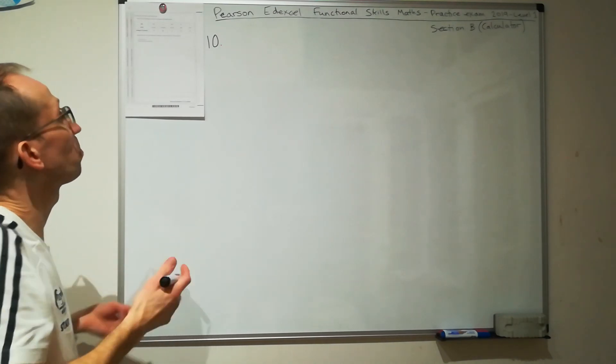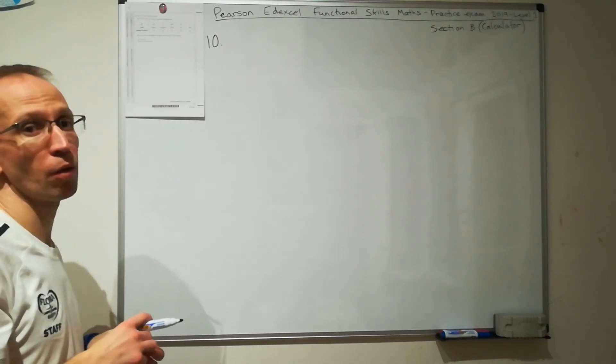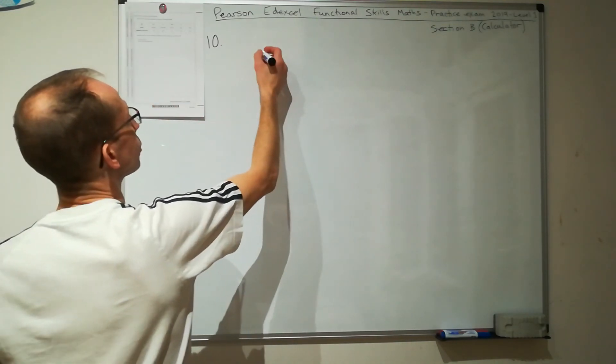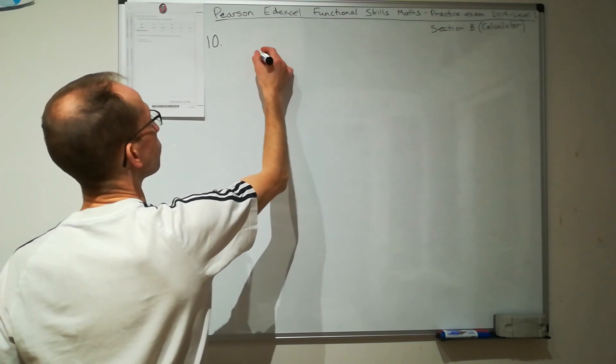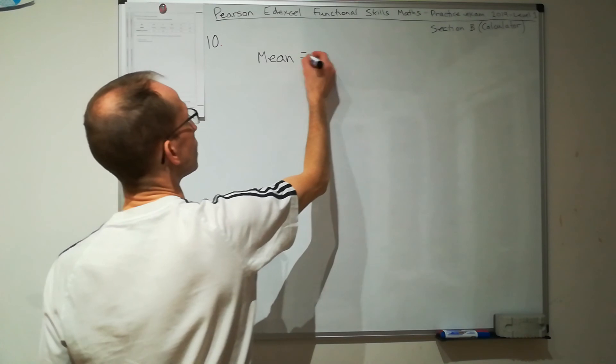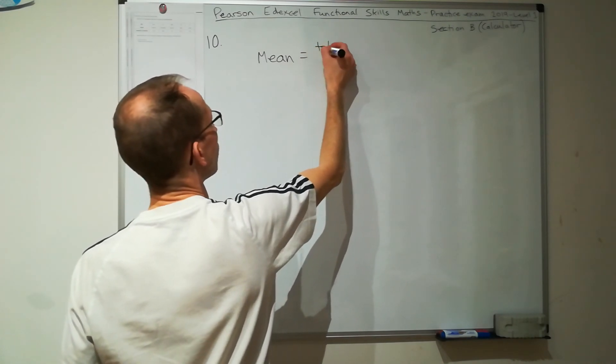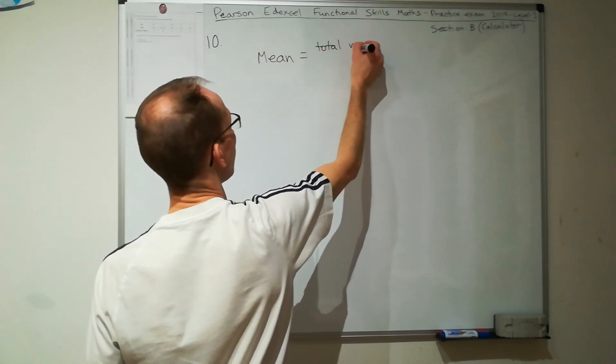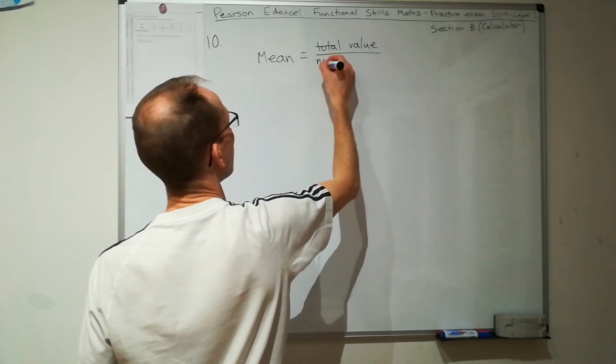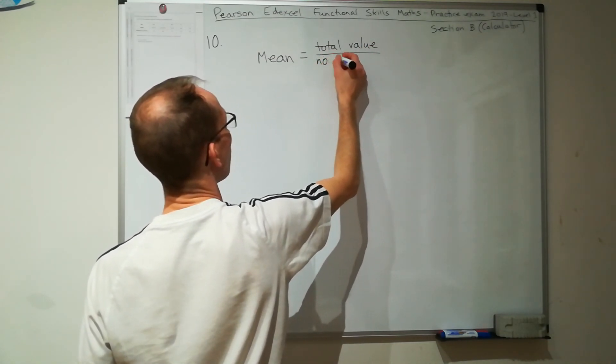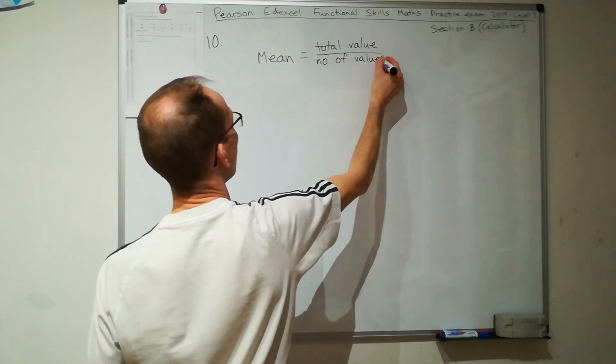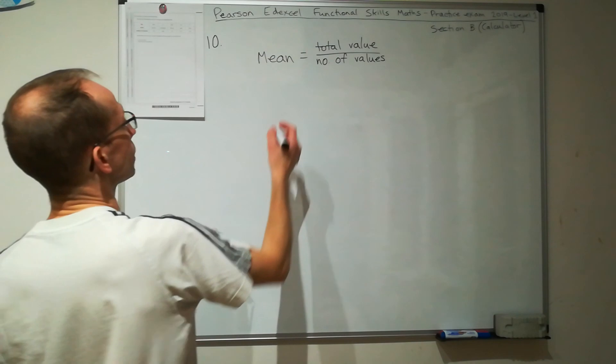Best way, let's work out the mean and then compare it to 200. To work out the mean we need the total value and then we divide that by the number of values.